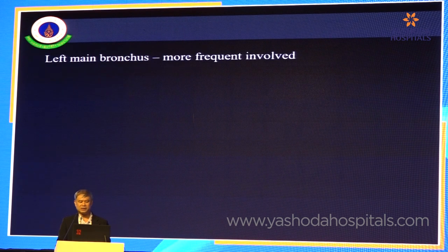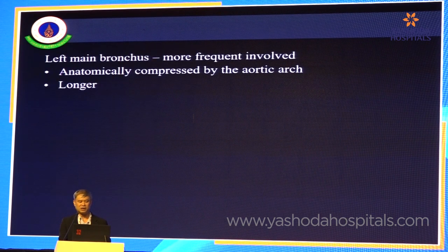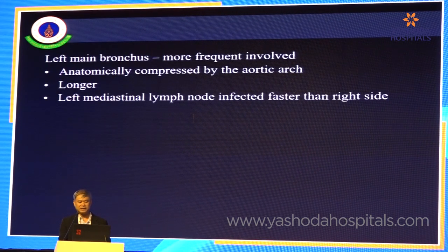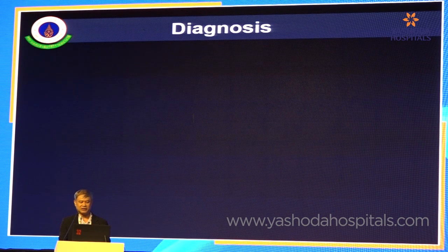The left mainstem bronchus is most frequently involved, possibly because of anatomical compression by the aortic arch, because it is longer than the right side, or because the left mediastinal lymph nodes become infected faster than the right side.